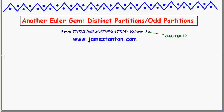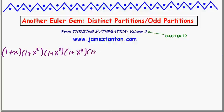Euler first examined the following infinite product: (1 + x)(1 + x²)(1 + x³)(1 + x⁴)(1 + x⁵)... and so on forever. Imagine we could actually expand this out. Will there be a constant term? Yes — it comes from choosing 1 from each of the parentheses, so 1 × 1 × 1 ... = 1.